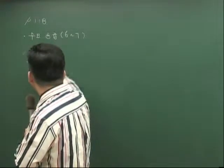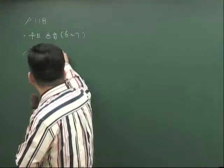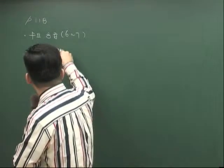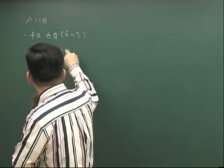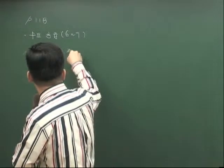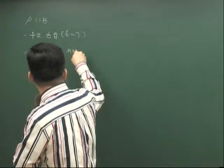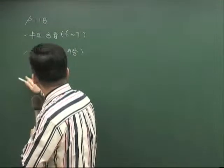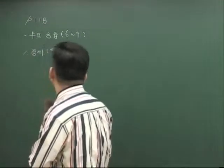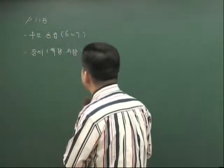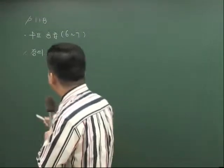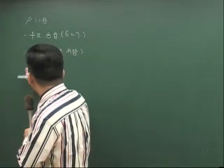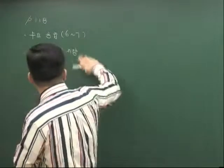수요공급의 정의를 하면서 유량의 개념과 절양의 개념에 대해서 정리해 주셔야 됩니다. 유량과 절약이 상당히 중요합니다. 두 번째는 수요공급의 법칙에 대해서 보셔야 되겠습니다.